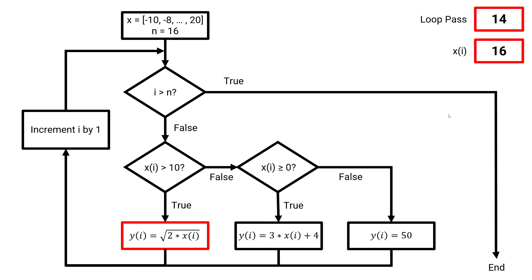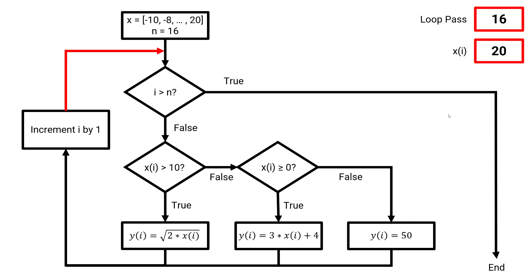We have loop pass 14, loop pass 15, and loop pass 16. At the end of loop pass 16, we increment i by 1, and our loop variable or array index has a value of 17. Now, there are not 17 elements inside of our array — there are 16. So now this statement is true, and our for loop ends.